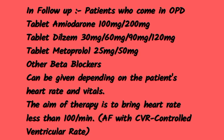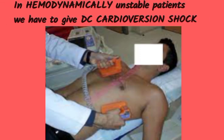The aim of therapy is to bring the heart rate to less than 100 per minute. If the heart rate is less than 100 per minute, we call it CVR — controlled ventricular rate — or AF with CVR.